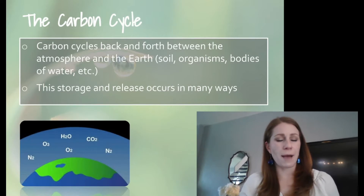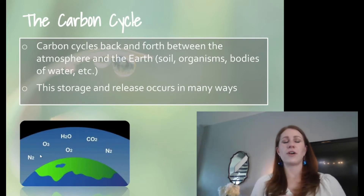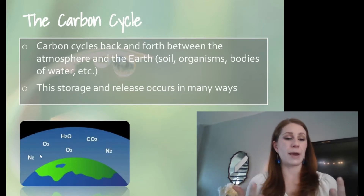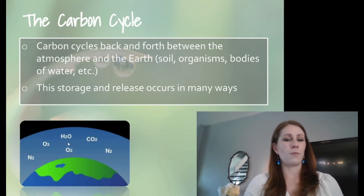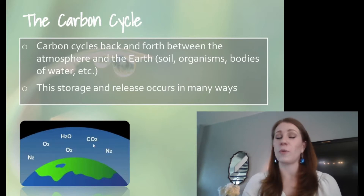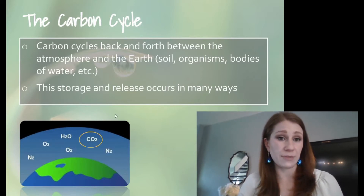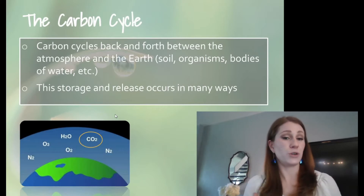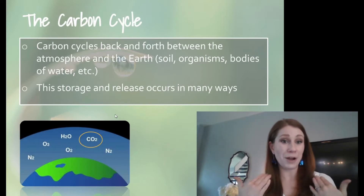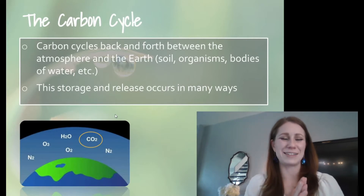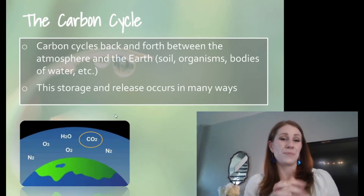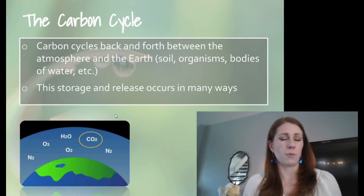Looking at our atmosphere in this picture, there are lots of different things that make up our atmosphere. We have nitrogen gas, we have oxygen, we have water vapor, and we have carbon dioxide. Carbon dioxide is incredibly prevalent in our atmosphere — this is what we produce when we breathe out. So me talking a lot right now, I'm breathing out a lot of carbon dioxide. That is one way that we take carbon from our bodies and release it. We just breathe, and that is a huge way that we release it.